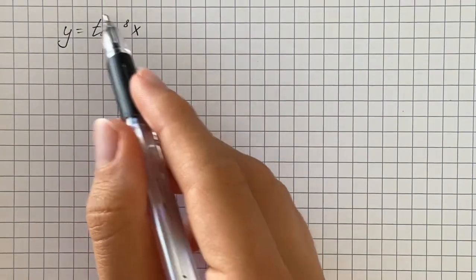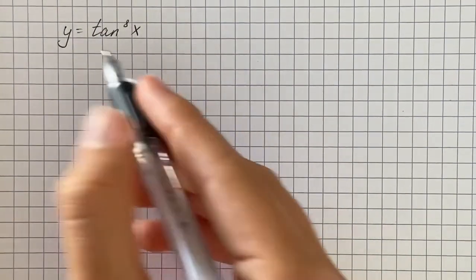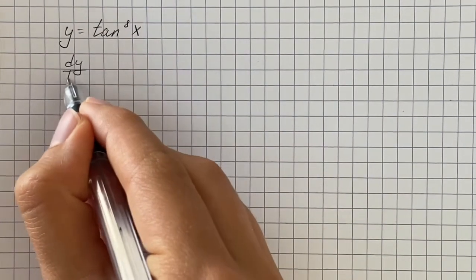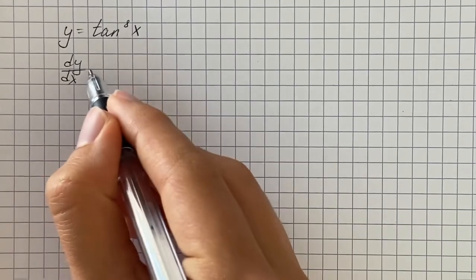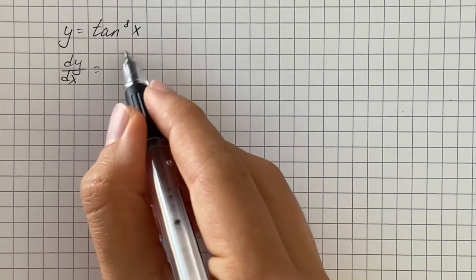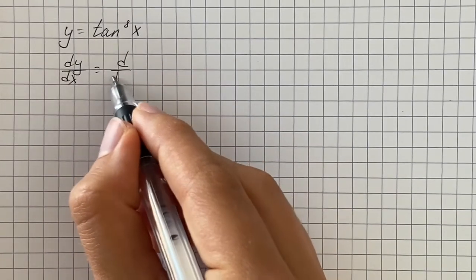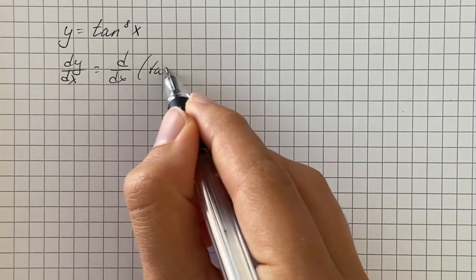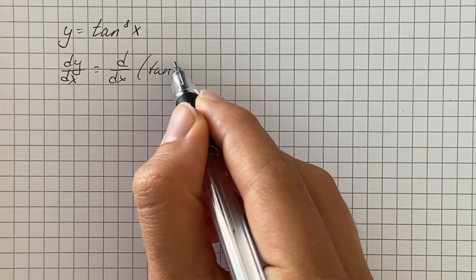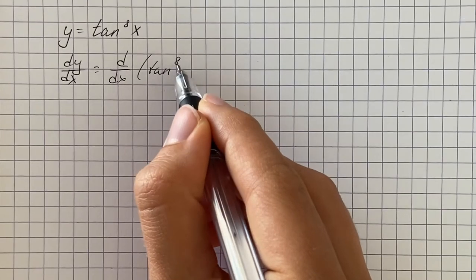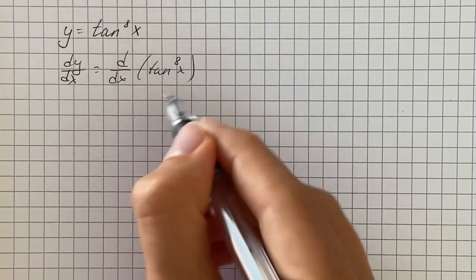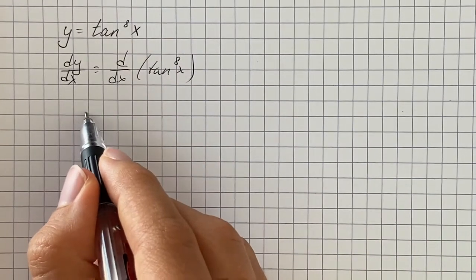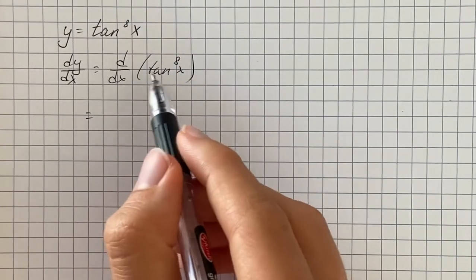We have to take the derivative of the given function and we're going to differentiate it with respect to x. We take the derivative of tangent to the eighth power of x, and here we're going to use the chain rule.